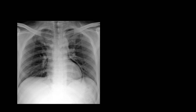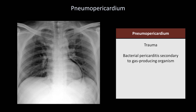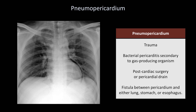This is easy to mistake for pneumomediastinum, but in this case the air is actually inside the pericardial sac, a condition called pneumopericardium. This is distinguishable from pneumomediastinum because the band of air is always single and more well demarcated. While pneumopericardium can outline the base of the aorta and pulmonary artery on occasion, it cannot extend further superior to the aortic arch or neck. Etiologies include trauma, bacterial pericarditis secondary to a gas-producing organism, cardiac surgery or pericardial drain, or very rarely a fistula between the pericardium and either the lung, stomach, or esophagus.